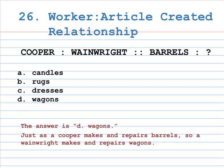Number 26: worker is to article created relationship. Cooper is to Wainwright, as barrels is to A. Candles, B. Rugs, C. Dresses, D. Wagons. The answer is D, Wagons. Just as a cooper makes and repairs barrels, so a Wainwright makes and repairs wagons. By the way, a Chandler makes or sells candles.